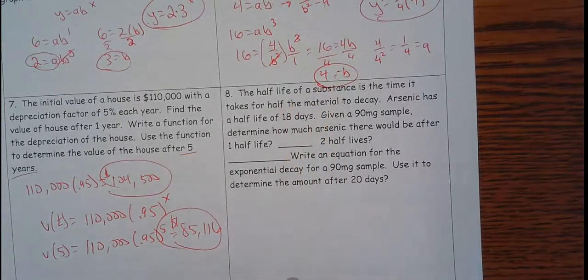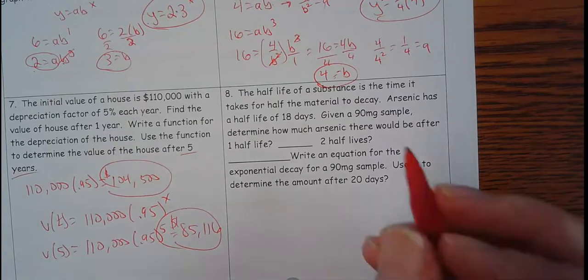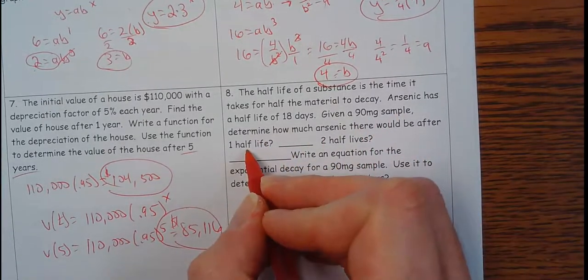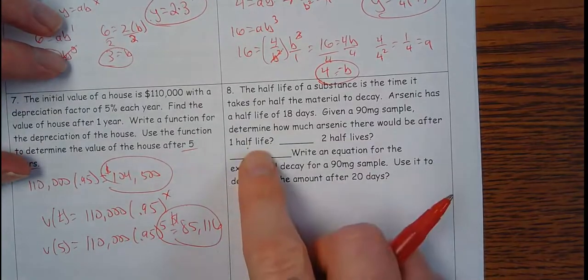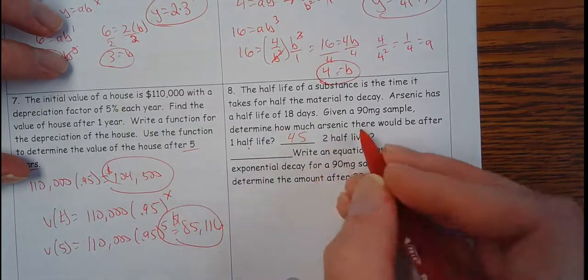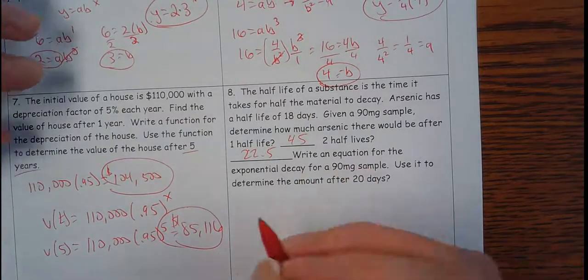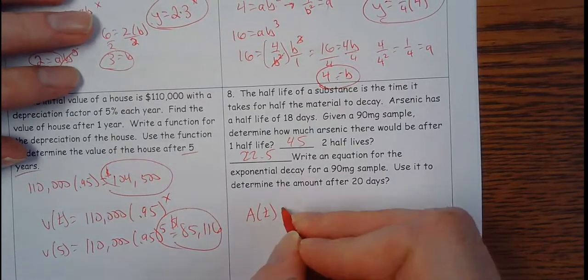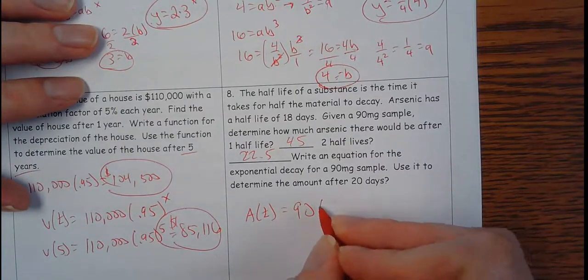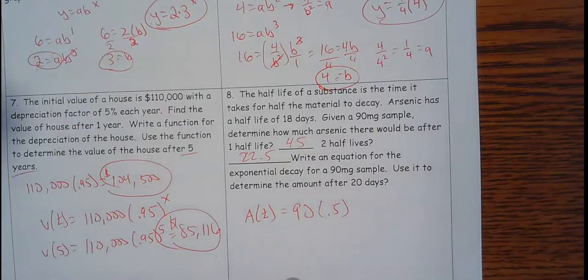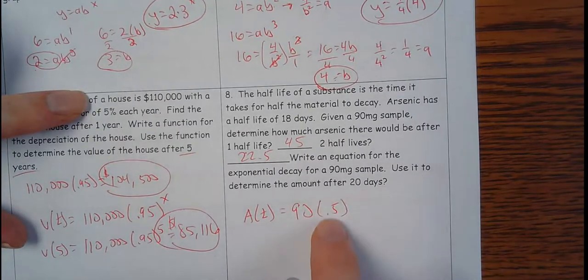The half-life of the substance is the time it takes for half material to decay. Arsenic has a half-life of 18 days. Given a 90 milligram sample, determine how much arsenic there would be after one half-life. Well, one half-life later, you're going to have half of that. So if it was 90, now it's going to be 45. Two half-lives, cut that in half again, it'll be 22.5. Now I need to write an equation for the exponential decay for this. My amount with respect to time is going to be my initial value, 90, and then my decay factor, half-life, is 0.5.